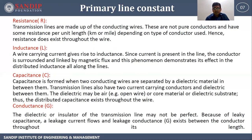Third primary constant is capacitance, which is formed when two conducting wires are separated by a dielectric material between them. Transmission lines also have two current-carrying conductors and dielectric between them. The dielectric may be air, core material, or dielectric substrate, so distributed capacitance exists throughout the wire. Conductance G: the dielectric of the transmission line may not be perfect. Because of leakage capacitance, a leakage current flows and leakage conductance G exists between the conductors throughout its length.